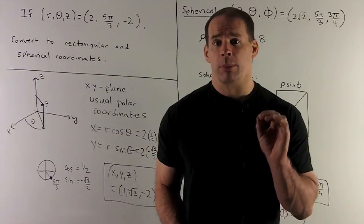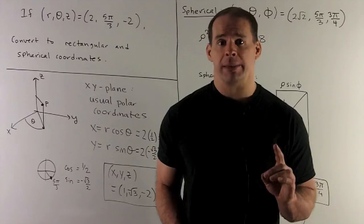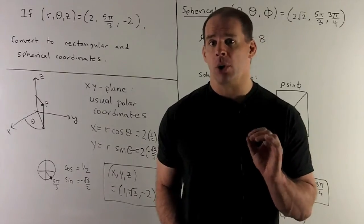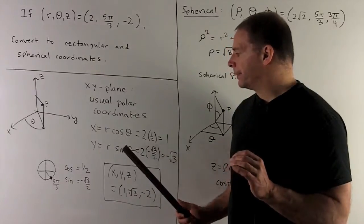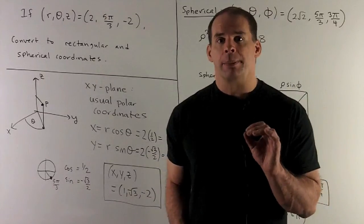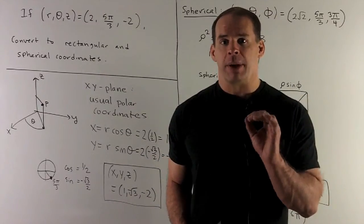So x will be r cosine theta, y will be r sine theta. So all I need to do is figure out cosine and sine for 5 pi thirds.